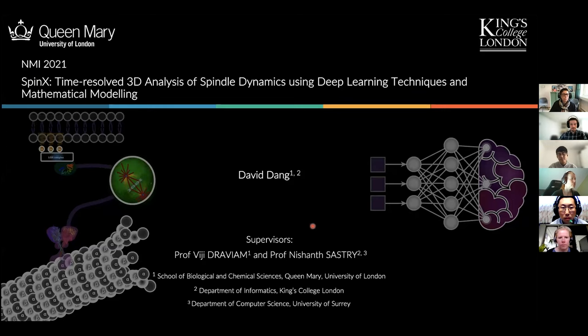Welcome to our second open lecture, part of the Smart Microscopy course. Today we are happy to have David Dan joining us virtually from London. Although he's very young, he has a foot in many places at once — his background is in statistics and computer science, but he is now dedicated to helping cell biologists using computer vision, deep learning, and statistics to study compartment dynamics in human cancer cells.